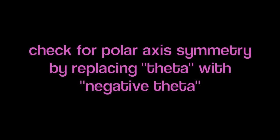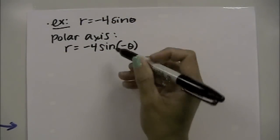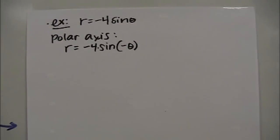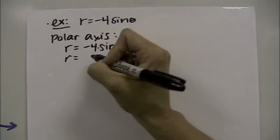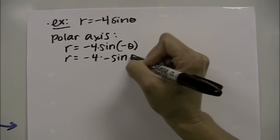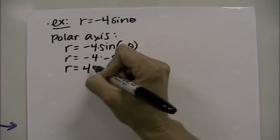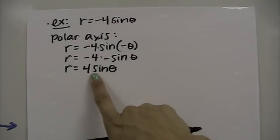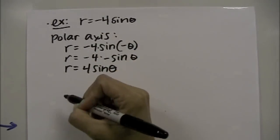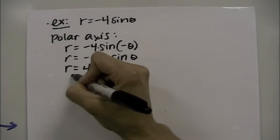Let's look at an example. For the polar axis test on r = 4·sine(θ), I replace θ with negative θ. Since sine of negative θ equals negative sine(θ), we get r = 4·(−sine θ) = −4·sine(θ). Since that is not exactly the same as the original equation r = 4·sine(θ), we say it may or may not have polar axis symmetry.